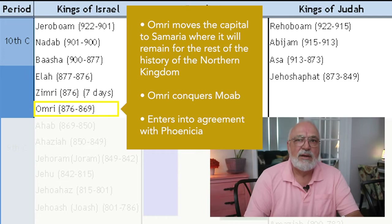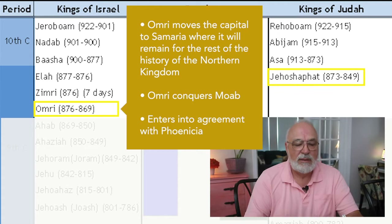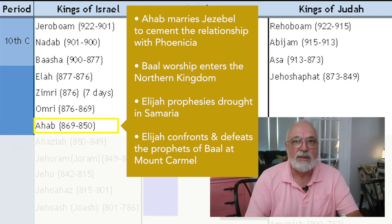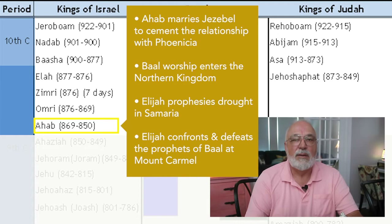When Omri dies, Ahab reigns — that's his son, again in the northern kingdom. He marries Jezebel to cement the relationship with Phoenicia. When that happens, Baal worship enters into the northern kingdom of Israel, and Ahab himself becomes a worshiper of Baal.